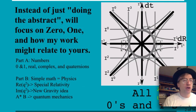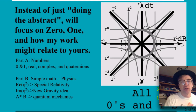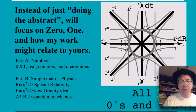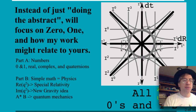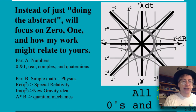Most of those folks don't actually use quaternions — it's a little curiosity, and that's it. That's kind of common in physics. So instead of just presenting my abstract, I decided to focus on zero and one, and how my work might relate to what they do, which never uses quaternions, but certainly uses zero and one. The first part was going to be on zero, one, the real numbers, the complex numbers, and the quaternions. Part B was going to be simple applications of quaternions to physics.